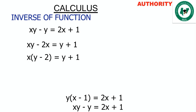So the 2x on the right hand side comes to the left, and the y on the left we take it to the right. We have xy minus 2x equals y plus 1.